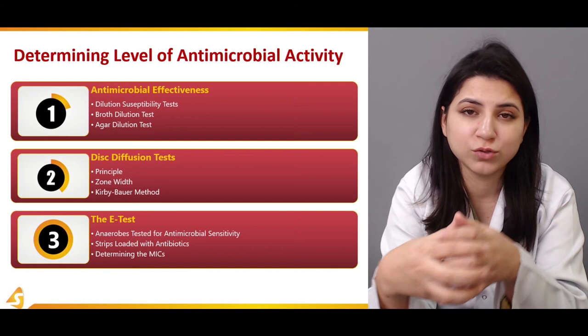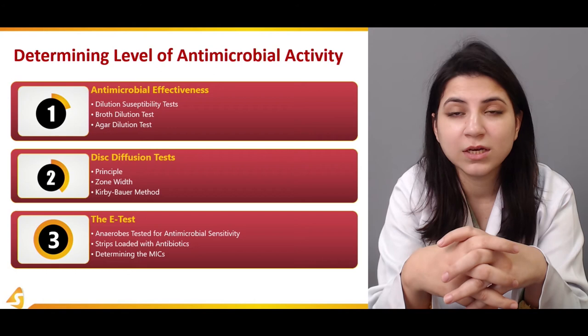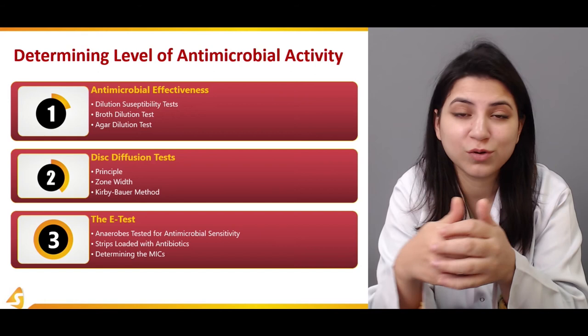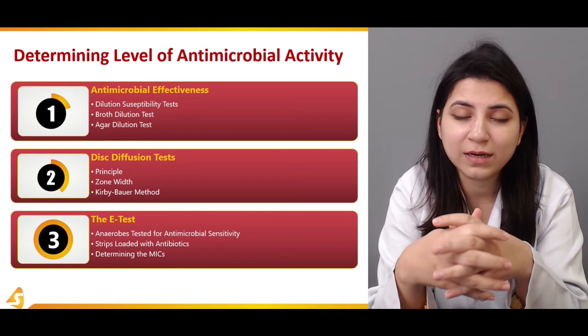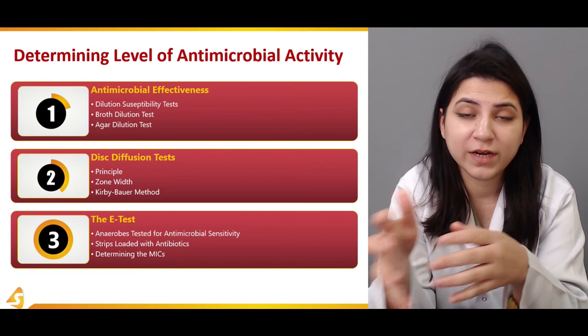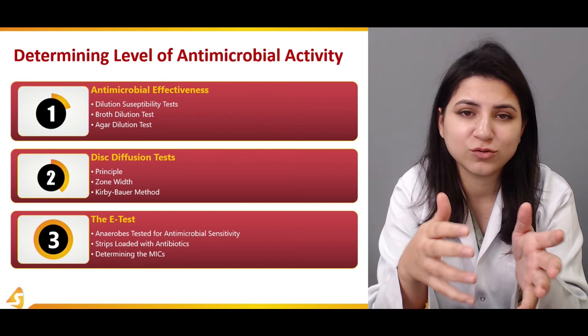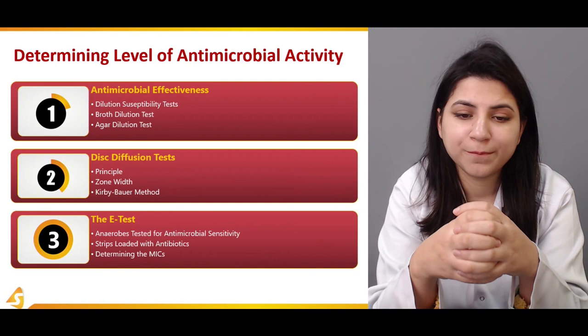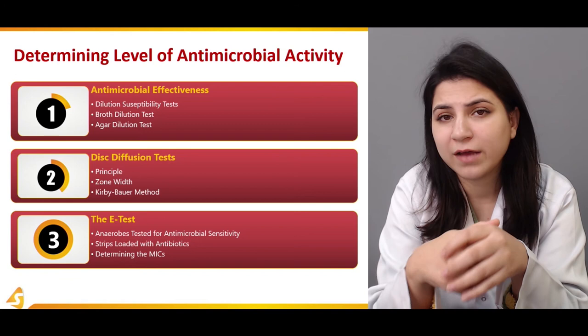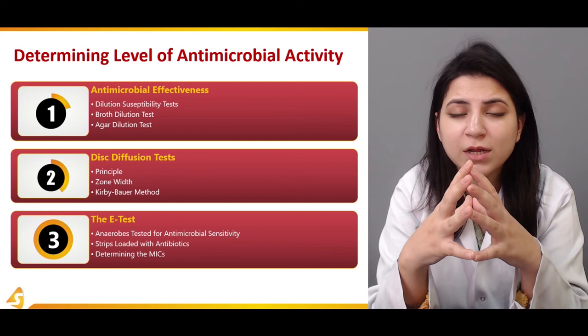In section two we'll be discussing the disc diffusion test. We'll start with the principle of disc diffusion test and see how MIC plays a role in this particular test as well. We'll also see what zone width is and how it helps us determine different factors of an antimicrobial agent, and we'll see what the Kirby-Boyer method is. Kirby-Boyer were actually two scientists who devised this diffusion method. We'll also see how graphs are plotted and how those graphs help us determine which bacteria are resistant, which are susceptible, and the amount of antimicrobial agent that is ideal.